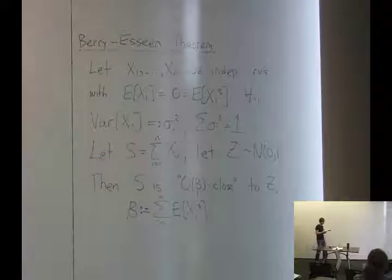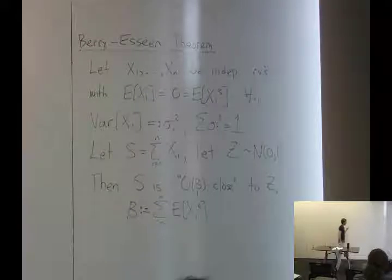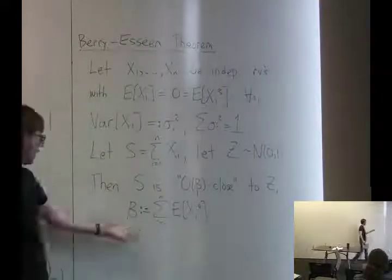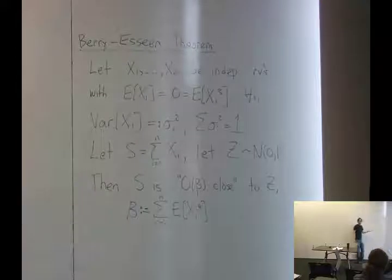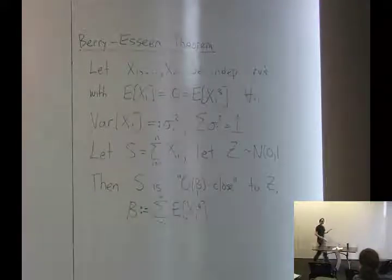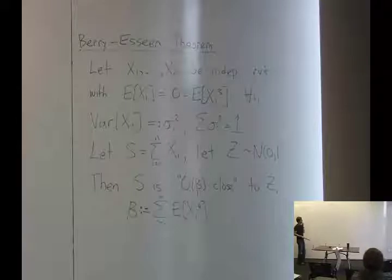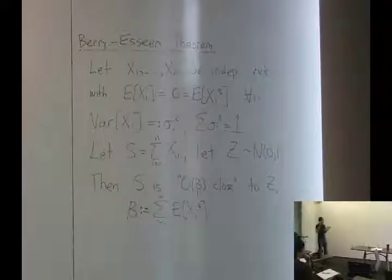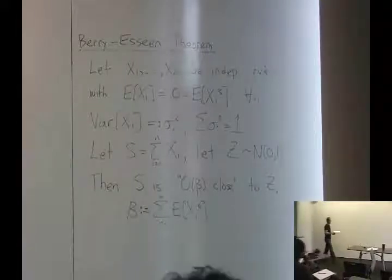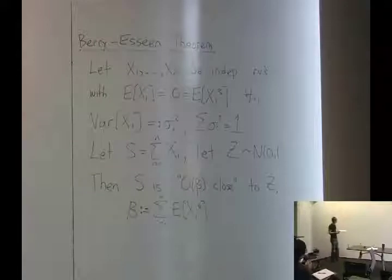You might ask whether beta actually looks like a small number. Ideally, if S and Z are supposed to be close, then beta should be small. Here's the standard way to bound beta: if furthermore all the xi's are B-reasonable — this was the notion we invented earlier of having a fourth moment bounded by some constant times the square of the second moment — then beta is at most the sum over i of B times the expected value of xi squared, squared.